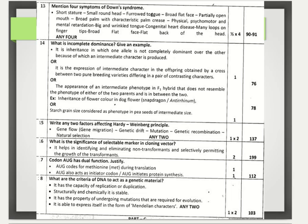Write any two factors affecting Hardy-Weinberg principle. These are gene flow or gene migration, genetic drift, mutation, genetic recombination, and natural selection. Any two of these carry one mark each. What is the significance of a selectable marker in a cloning vector? It helps in identifying and eliminating non-transformants and selectively permitting the growth of transformants.